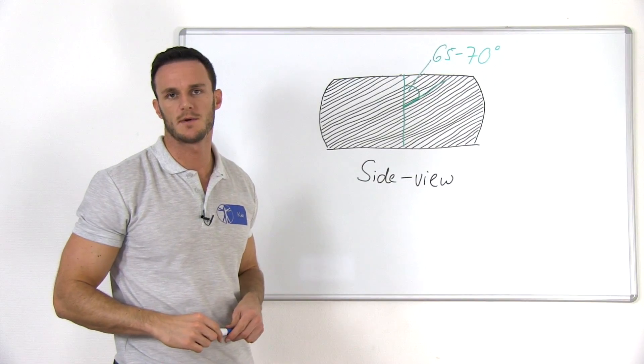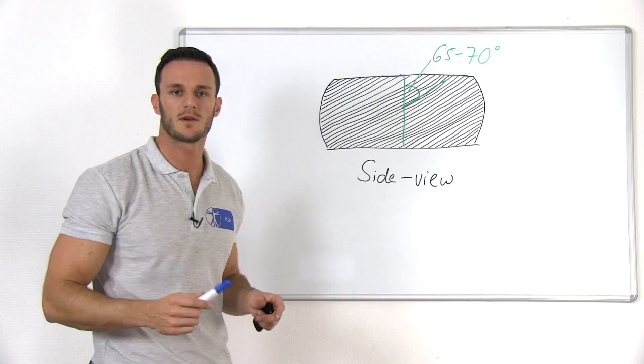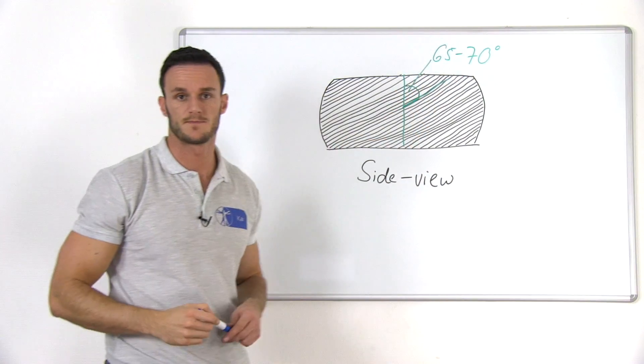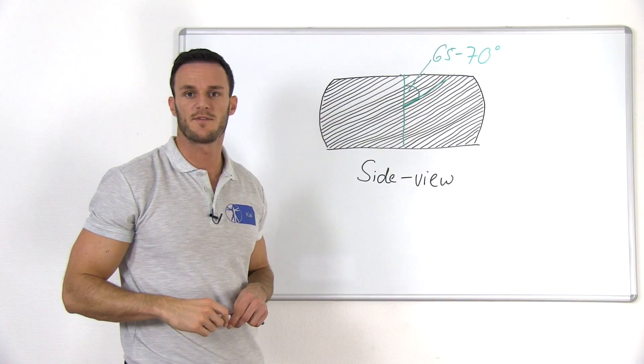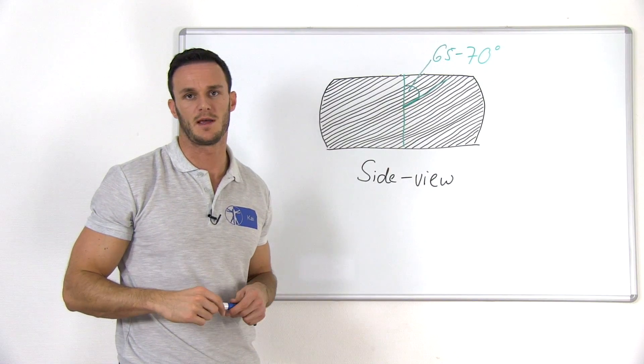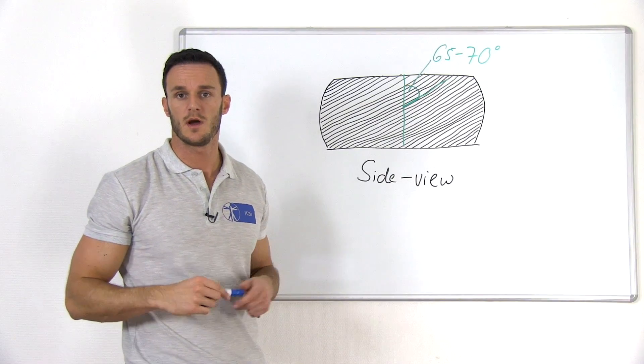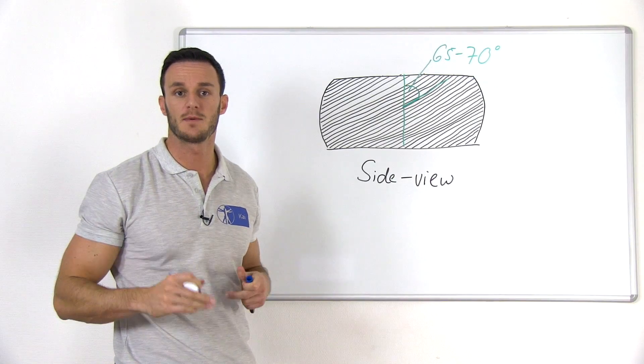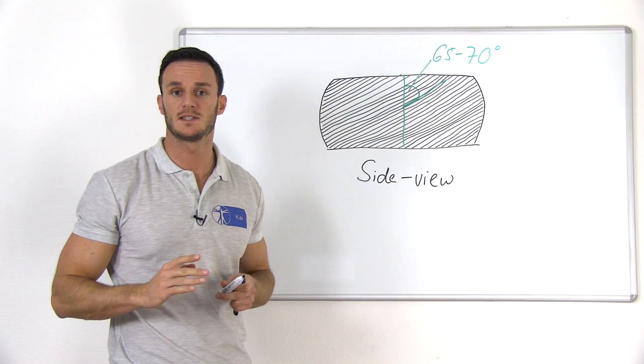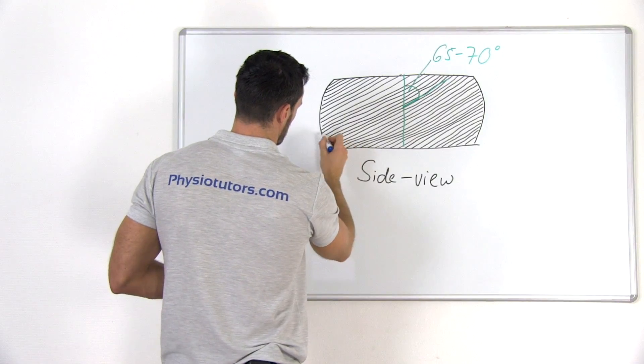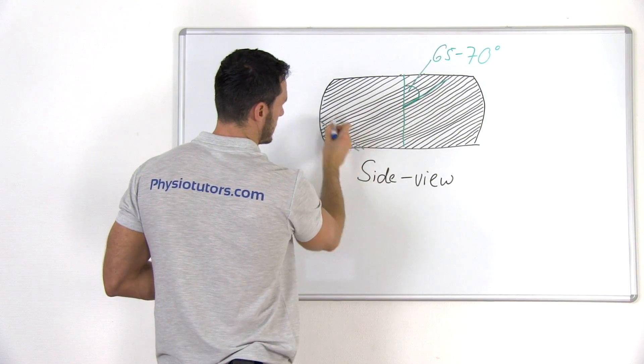Within a lamellae, the collagen fibers run parallel to each other with an orientation of 65 to 70 degrees from vertical. The orientation of the fibers change within each lamellae. So, the underlying lamellae of the one that we just drew will have inclined collagen fibers that are angled 65 to 70 degrees in the opposite direction.